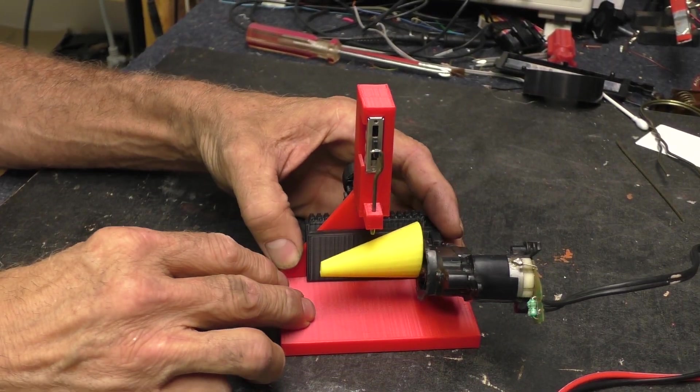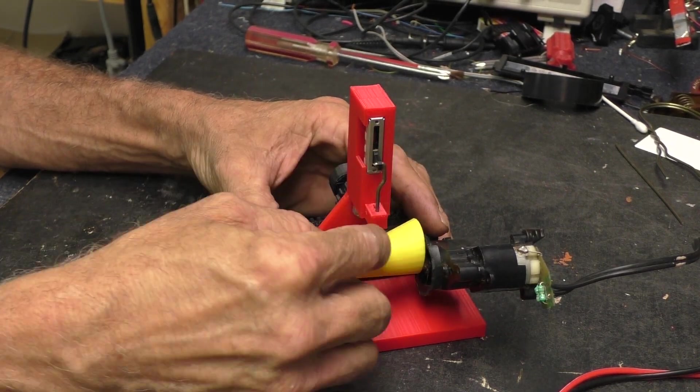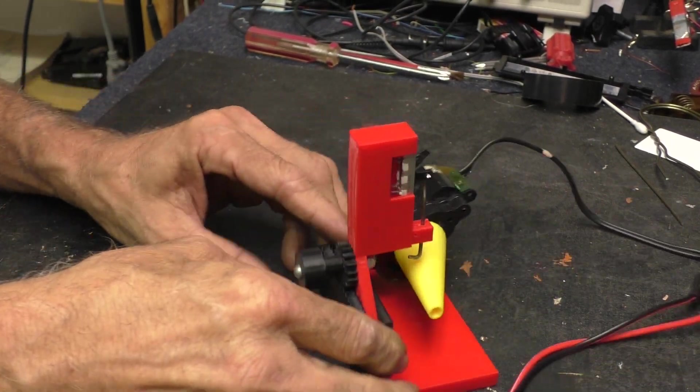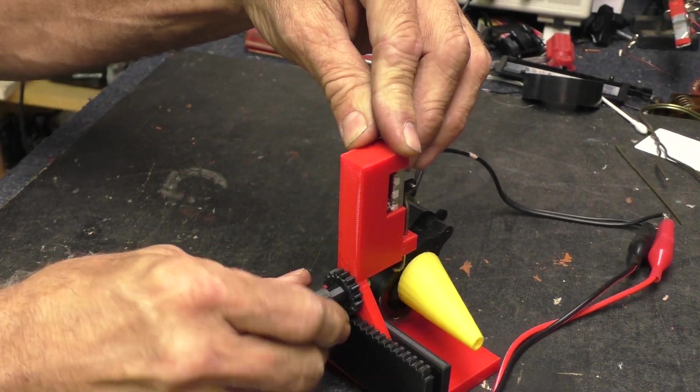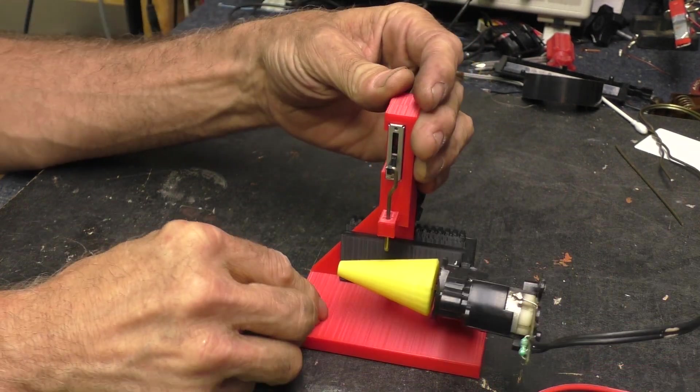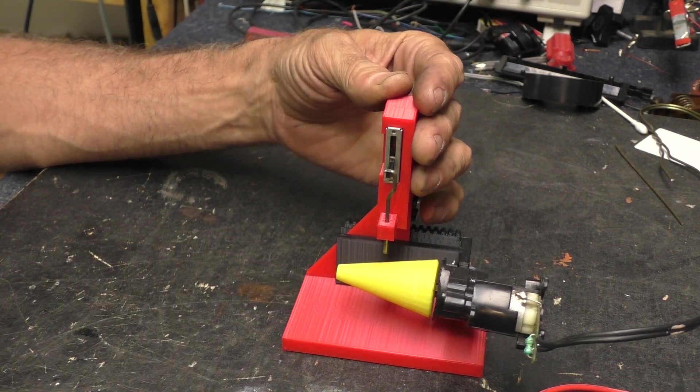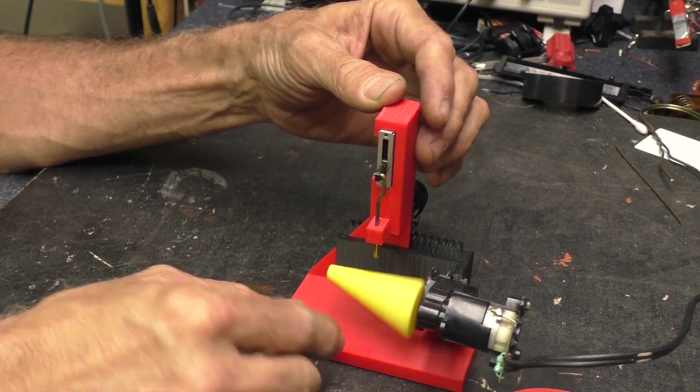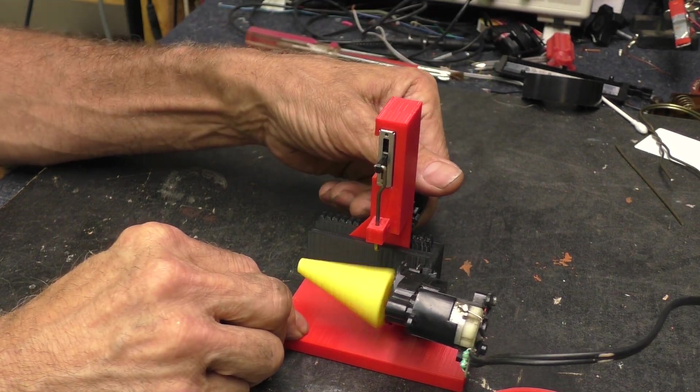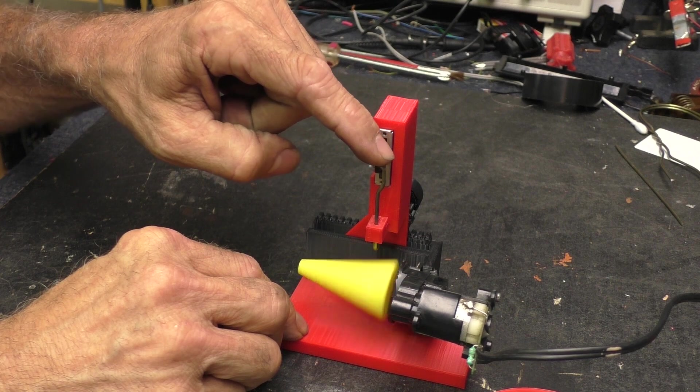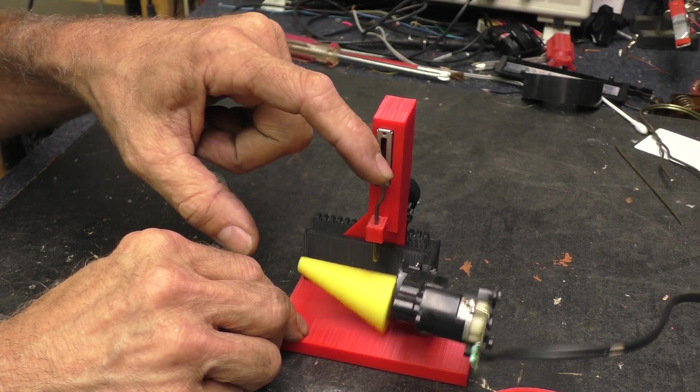So here it is all together with the potentiometer in place. The 3D cam is there. It slides back and forth with the sector gear. Pretty nifty. And well let me show you. It's got some issues. It's not perfect. Didn't expect it to be perfect. It's the first iteration.